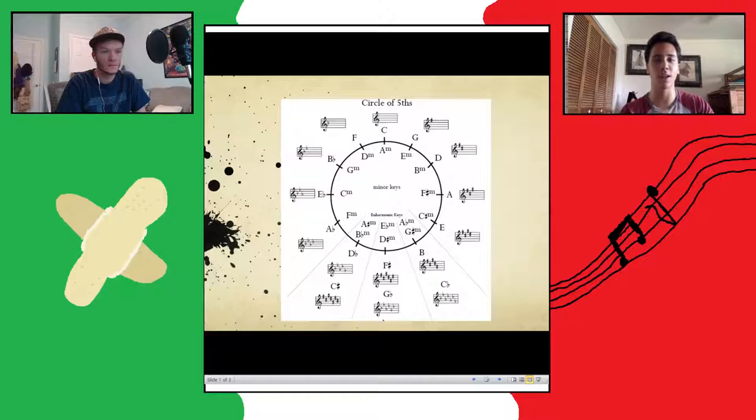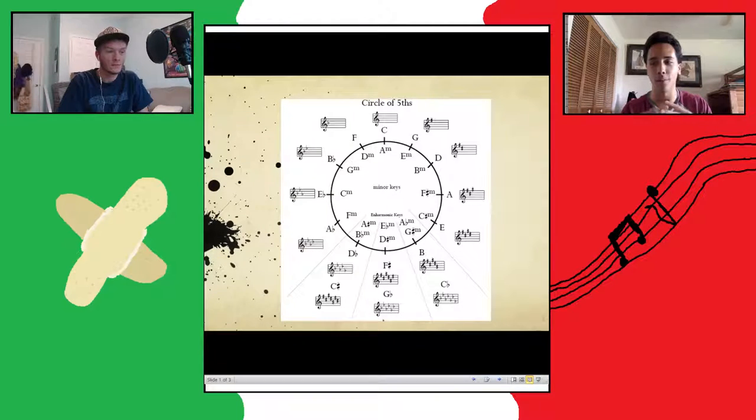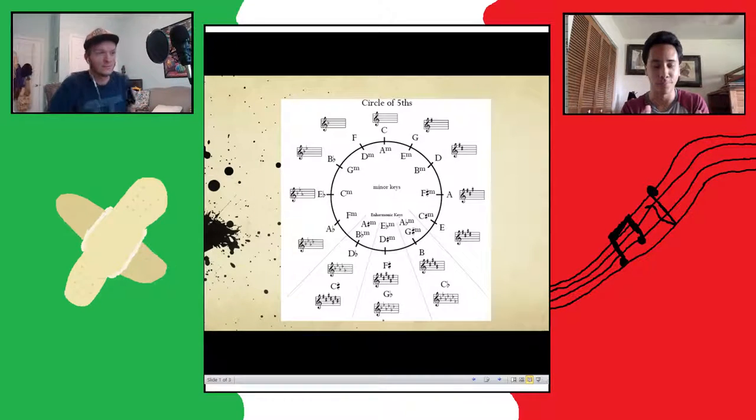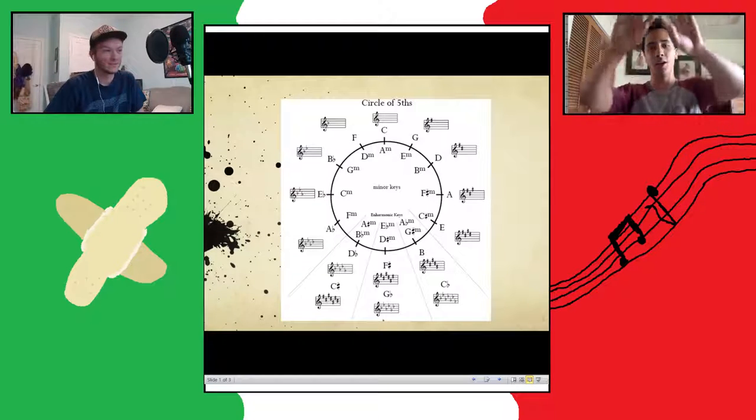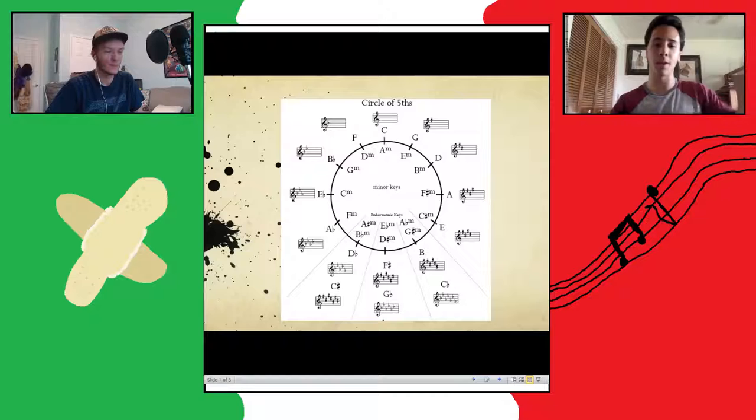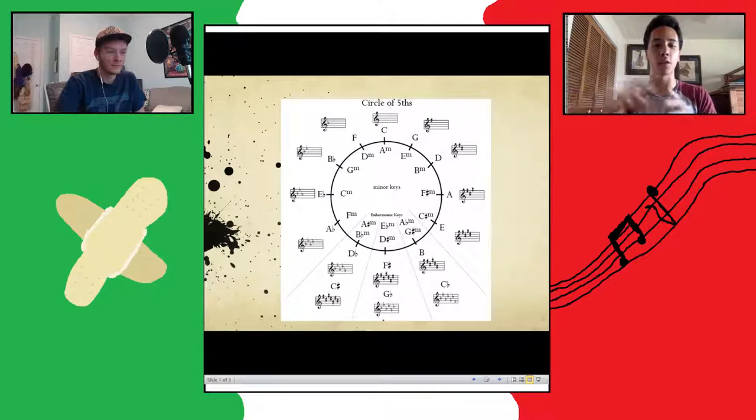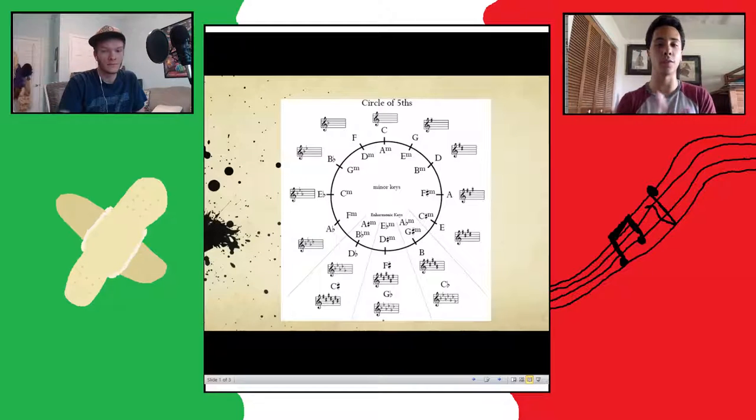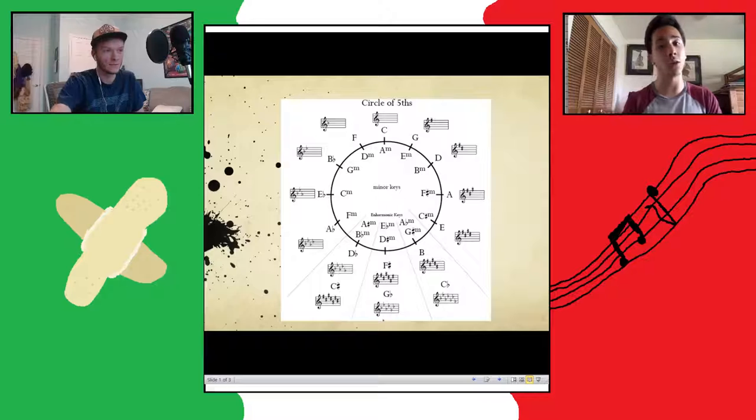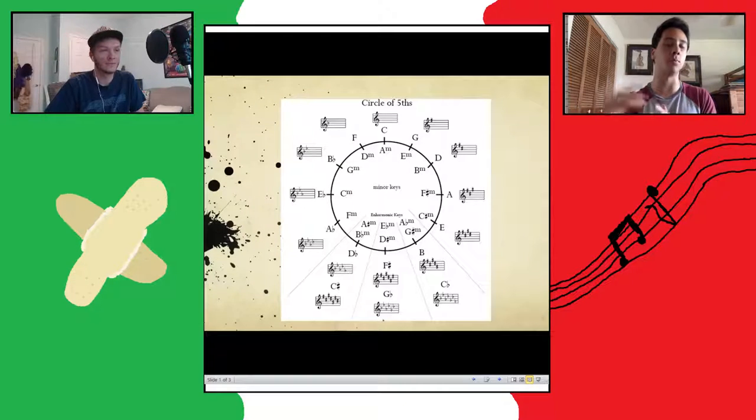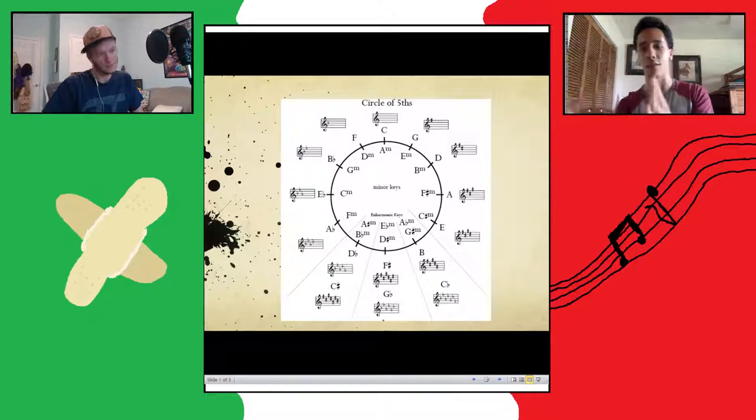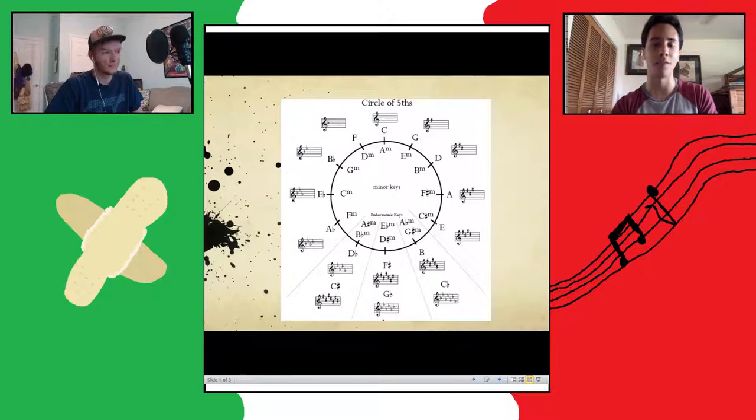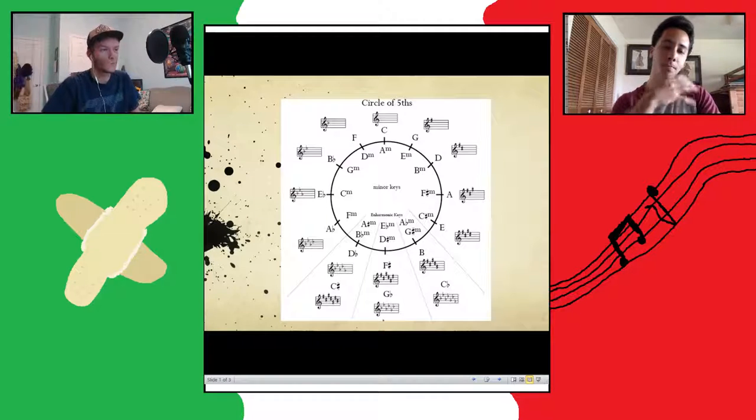So what the circle of fifths is, is it's kind of this concept, and as you can see with the diagram that Jono has up right now, it's just exactly what it sounds like, a circle. And what happens is the notes that you're seeing, the F, C, G, and all those notes, depending on whichever way around the circle you're going, you're moving in what's called an interval known as a fifth, which is five whole steps, or more simplistically, seven what are called semitones or half steps.